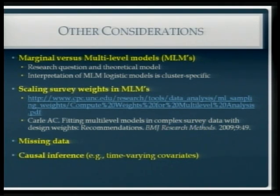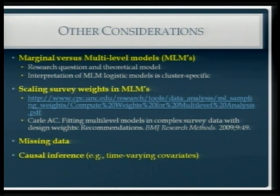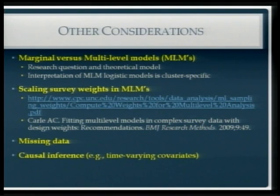If you think there's going to be a lot of heterogeneity and that's of clinical or programmatic interest, you'll probably want to go with a multi-level model. If you just want population effects and the individual heterogeneity is more of a nuisance parameter, you can just account for the correlation and get population estimates. Population estimates are very easy to interpret. Multi-level estimates are a little more challenging to interpret, especially when your outcome is dichotomous.